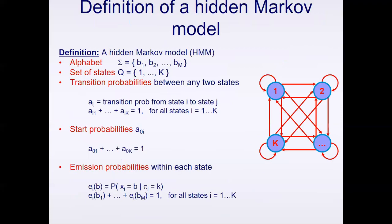So here's the big picture of a hidden Markov model. We have observations, states, sequential data, and the Markovian assumption which governs how sequential processes are characterized. We have some alphabet, some set of states, our transition probabilities, our initial probability to start the sequence, and our emission probabilities — also referred to as state conditional probabilities — the probability of each observation given some state.